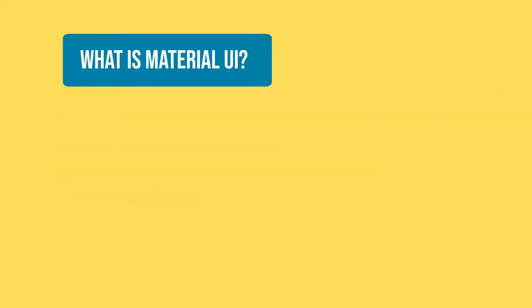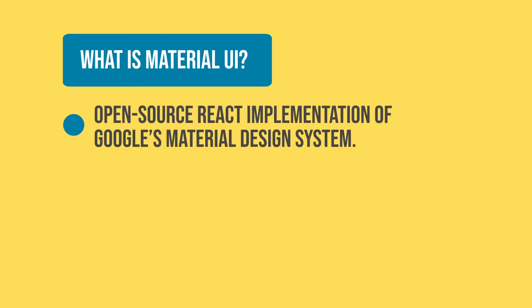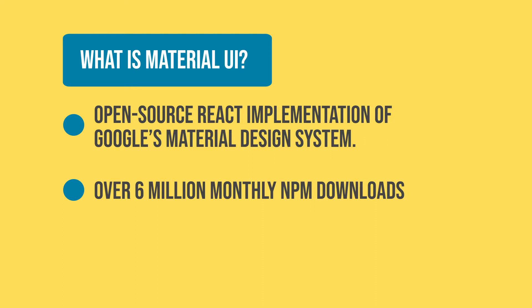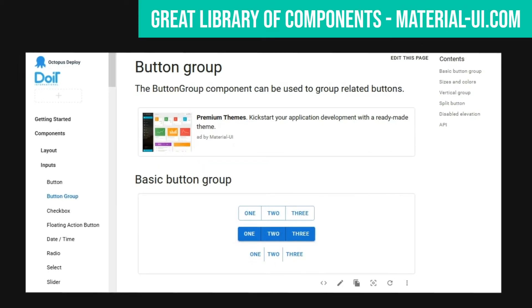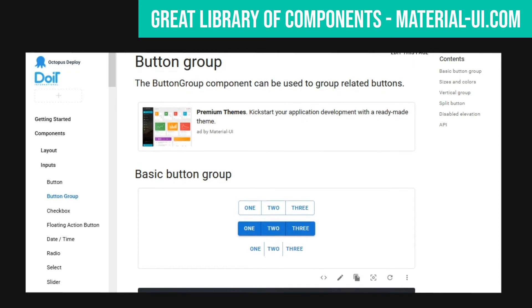What is Material UI? Material UI is a React implementation of Google's Material Design system. It is a well-maintained open source library which has over 6 million monthly npm downloads and 60,000 GitHub stars. It has a very good list of reusable components that you can use to make any web application.